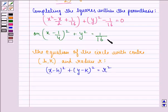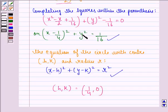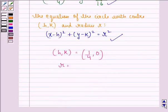If we compare equations, we have the point (h,k) = (1/4, 0), because y² can be written as (y - 0)². The radius is 1/4 because (1/4)² = 1/16.